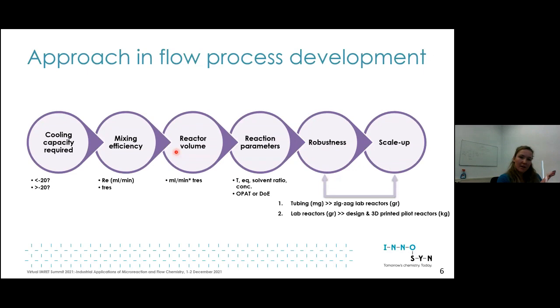Let's look at the workflow process we follow when we get a request to develop such a process. First we look at what cooling capacity is required. Even though in batch the required temperatures can be very low, minus 80, due to good heat transfer and mass transfer in flow technology you can work at higher temperatures without affecting chemistry because there are almost no hot spots.